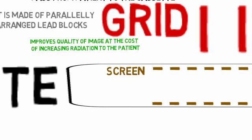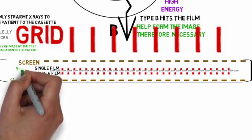This is the screen. Screen is made up of calcium tungstate. And this is the single film, and this is the double film. Both of these are made up of silver bromide.